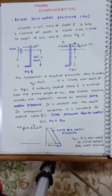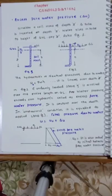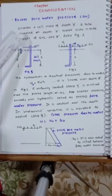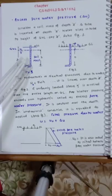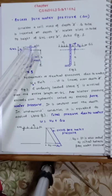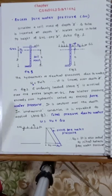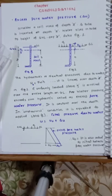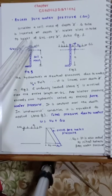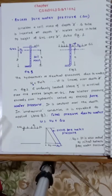Before we go through consolidation, let us revise hydrostatic pressure or neutral pressure and how it is different from the new term called excess pore pressure. Consider a soil mass at depth z — a tube is inserted at depth z and water rises in the tube to an equal height h, so that z equals h. The hydrostatic neutral pressure due to the water is u0 = γw · h. h is up to the water table; z is measured from the ground level. This is linear — zero at the water table, increasing as γw · h.